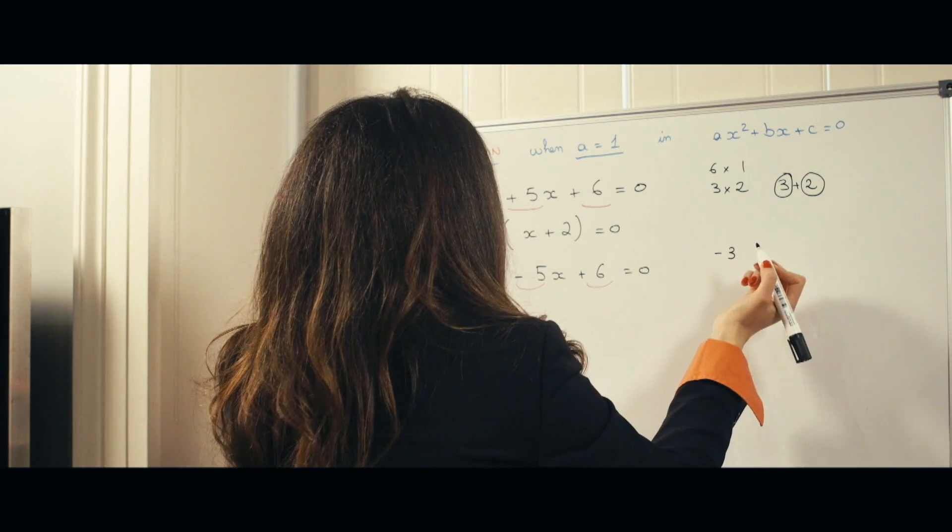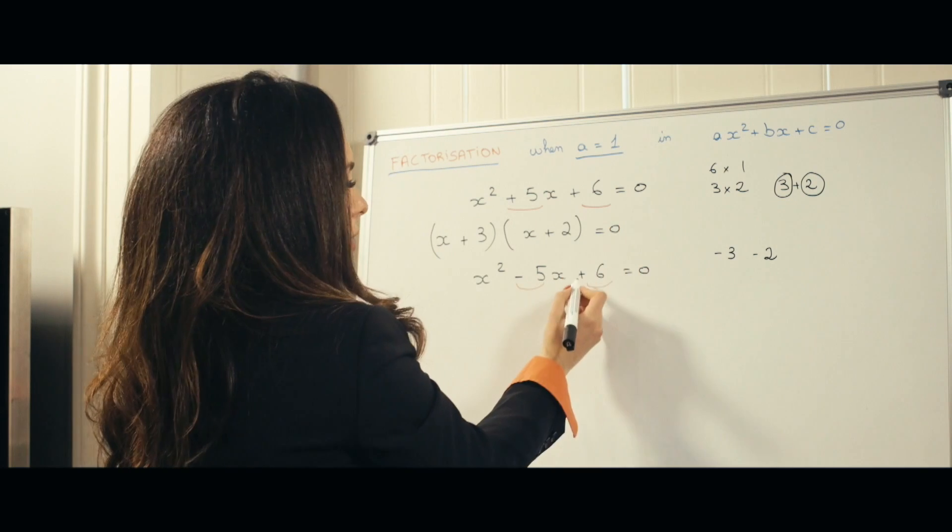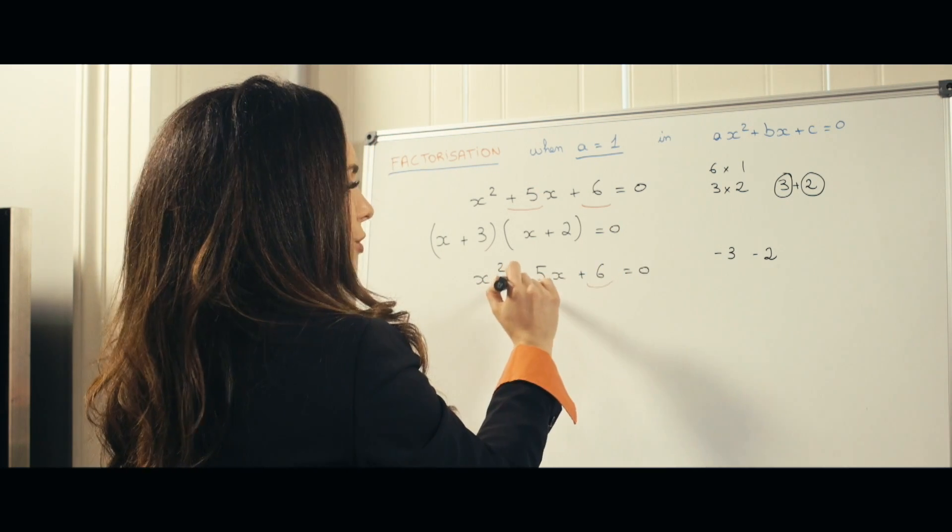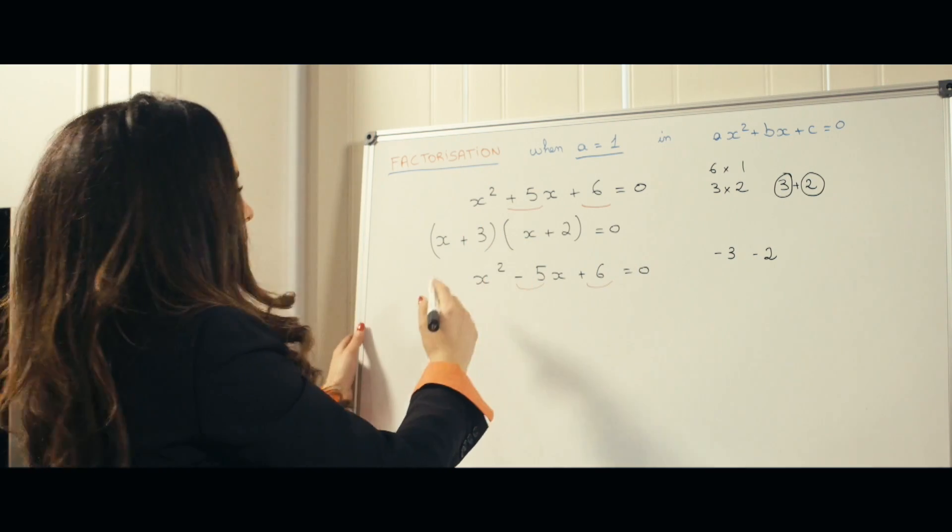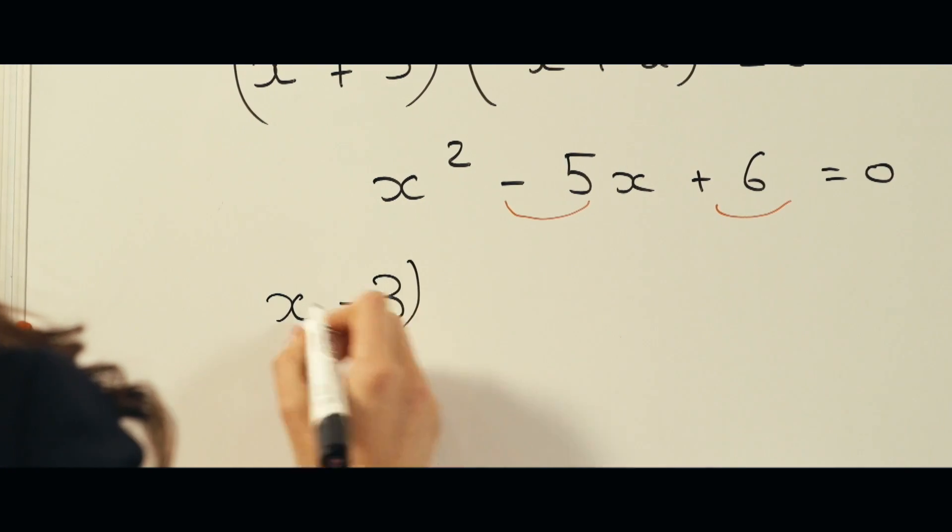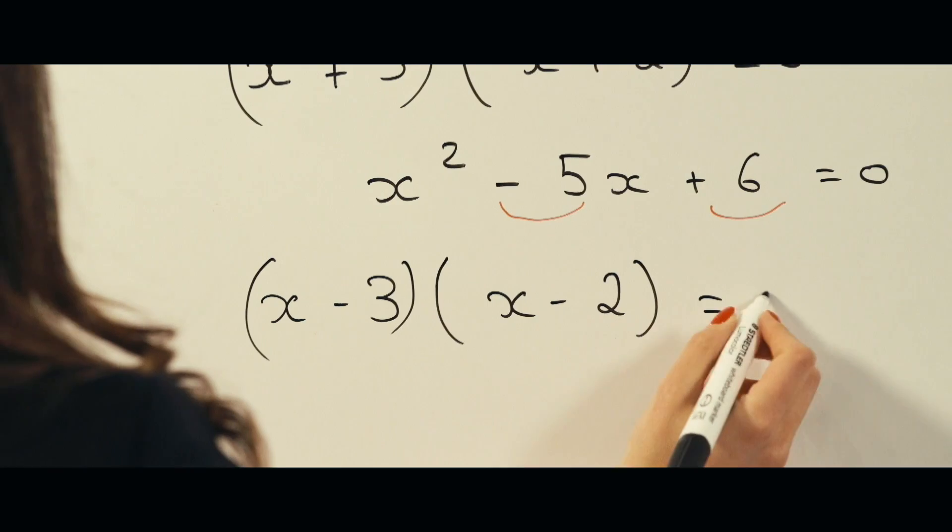So if we pick minus 3 and minus 2, the product is still positive, see? Because minus 3 times minus 2 is 6, but now the sum minus 3 minus 2 is minus 5. So you'll see in this case we'll have x minus 3 times x minus 2 is equal to 0.